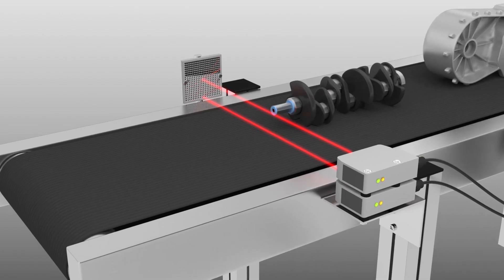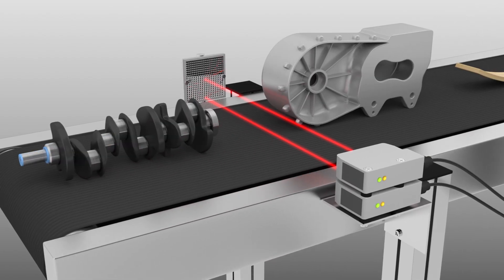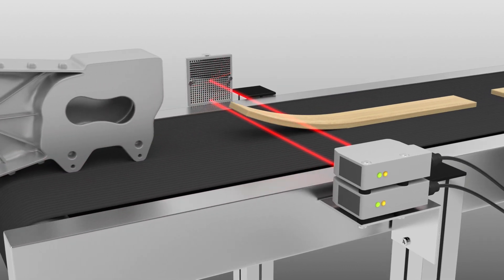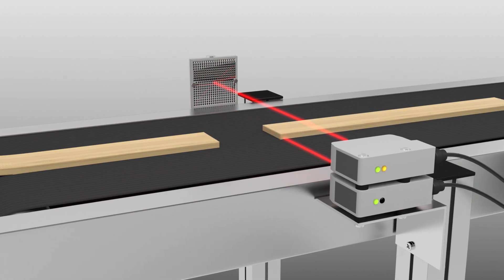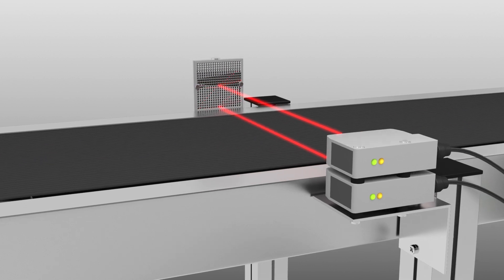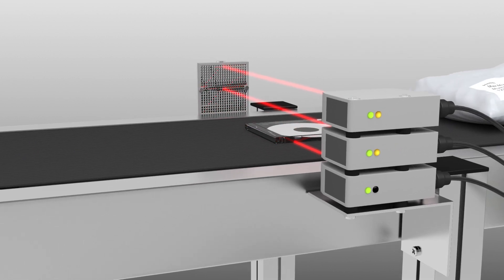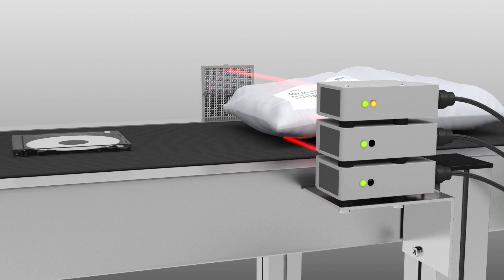Two photoelectric sensors are stacked on top of one another in order to reliably detect the leading edge of objects of varying heights. When attempting to detect flat or irregular objects on a conveyor, the situation looks even worse.